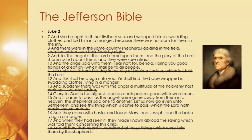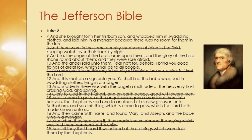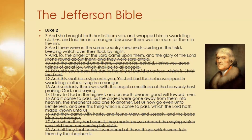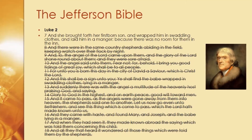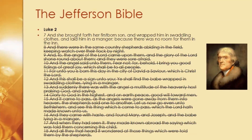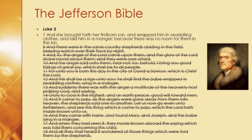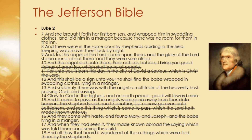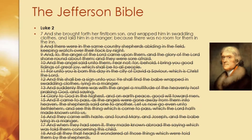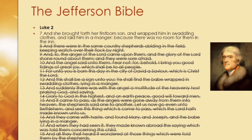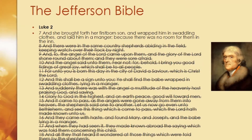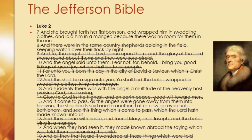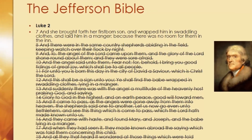Thomas Jefferson was a Deist, and he actually wrote his own version of the Bible, called the Jefferson Bible. He literally took a penknife and cut out the parts he rejected — the miracle stories and so on. The slide shows which passages he removed, crossed out. A tag will be provided so you can read the rest of his version of the Bible.